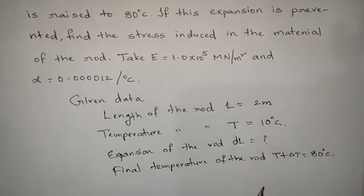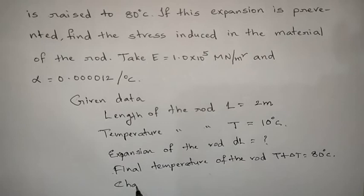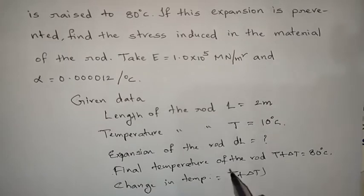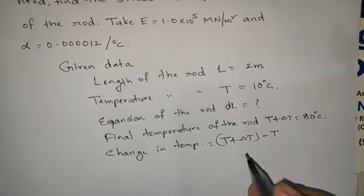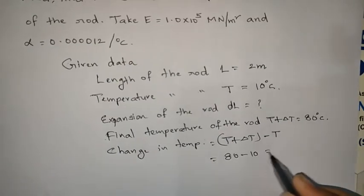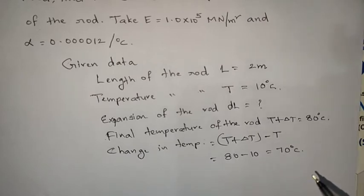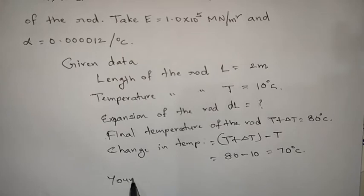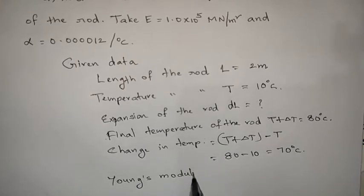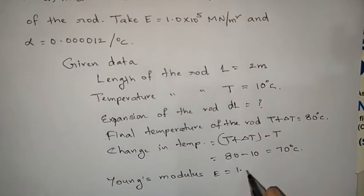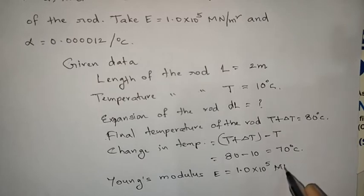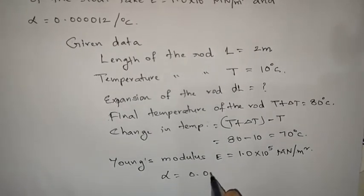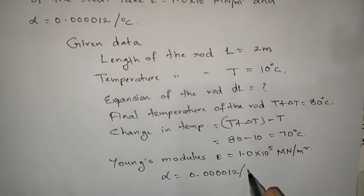So the change in temperature equals final temperature minus original temperature T. That equals 80 minus 10, and that equals 70 degrees centigrade. Young's modulus E equals 1.0 into 10 power 5 mega Newton per meter square. And alpha is given as 0.0000012 per degree centigrade.